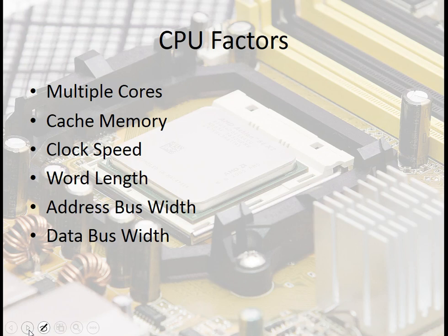The six factors that affect CPU performance are: multiple cores, cache memory, clock speed, word length, address bus width, and data bus width.